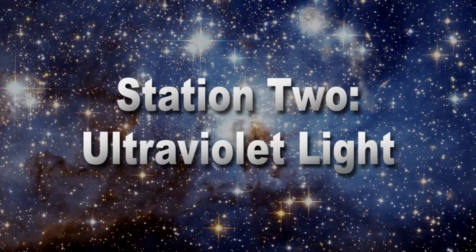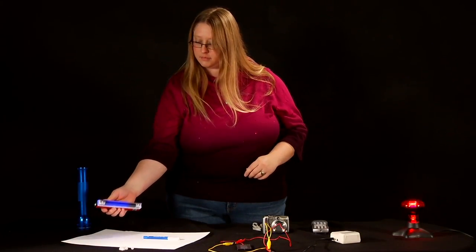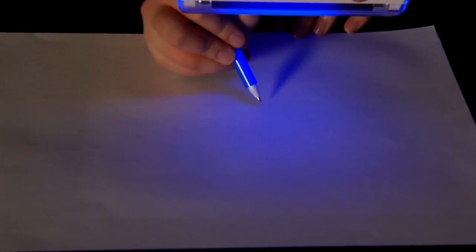The second type of light is ultraviolet. The source is a small black light. As you can see, it also produces a small amount of purple light, but since we can see that, it's visible light, not ultraviolet.